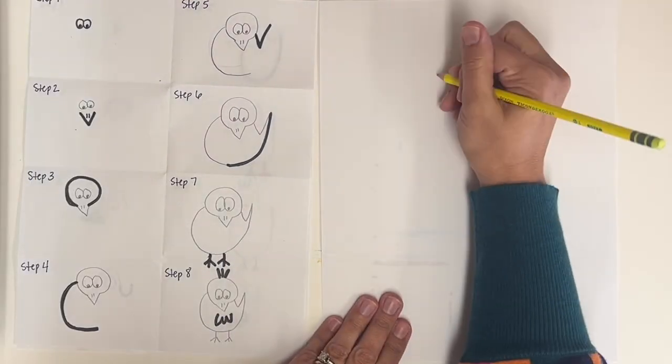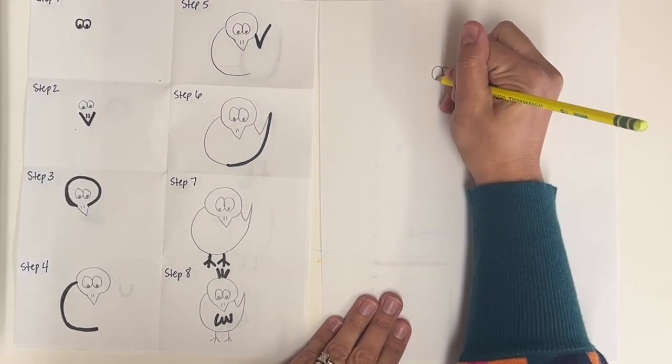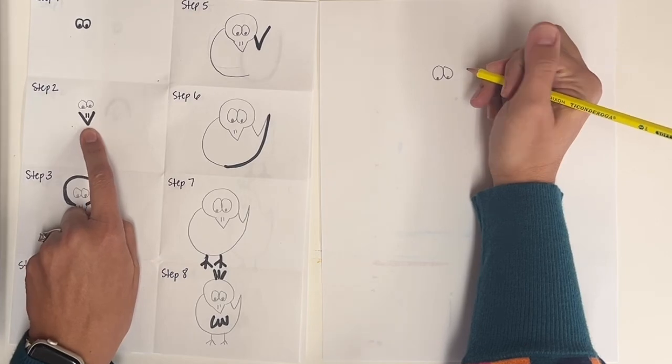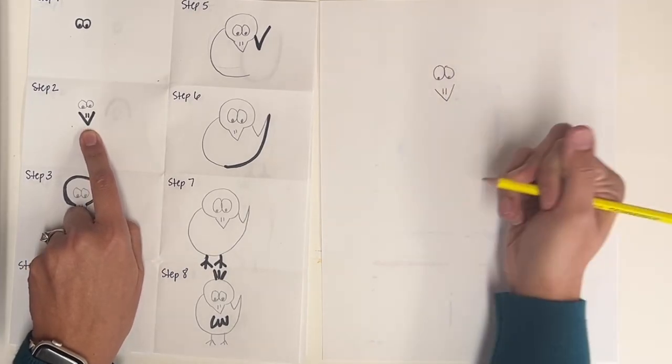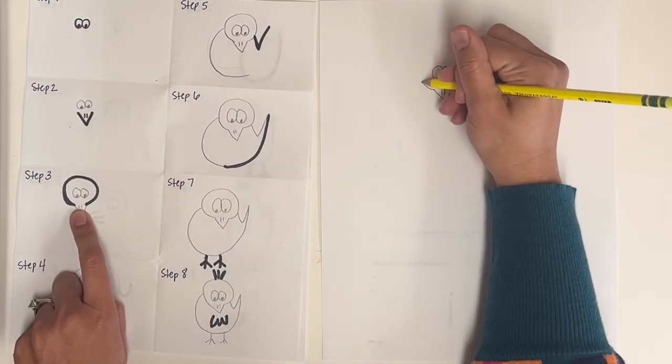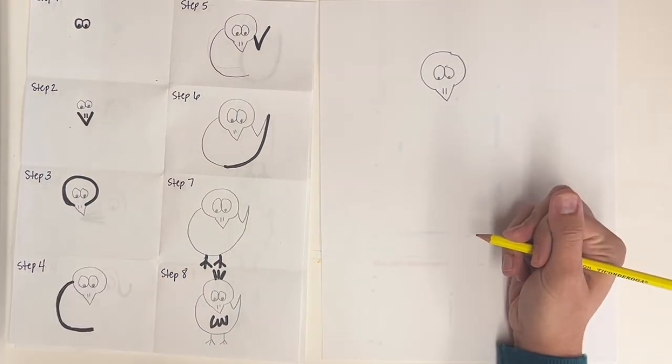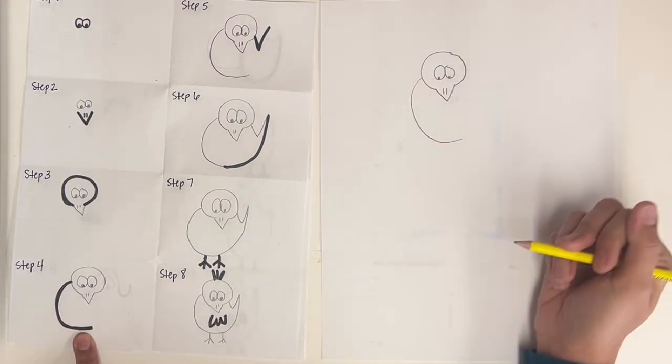So on my scrap paper, I'm going to draw two eyes. That's step one. Go down here to the beak. I draw a beak with two little lines. Then I draw the head. It attaches to the beak. Then I draw this letter C.